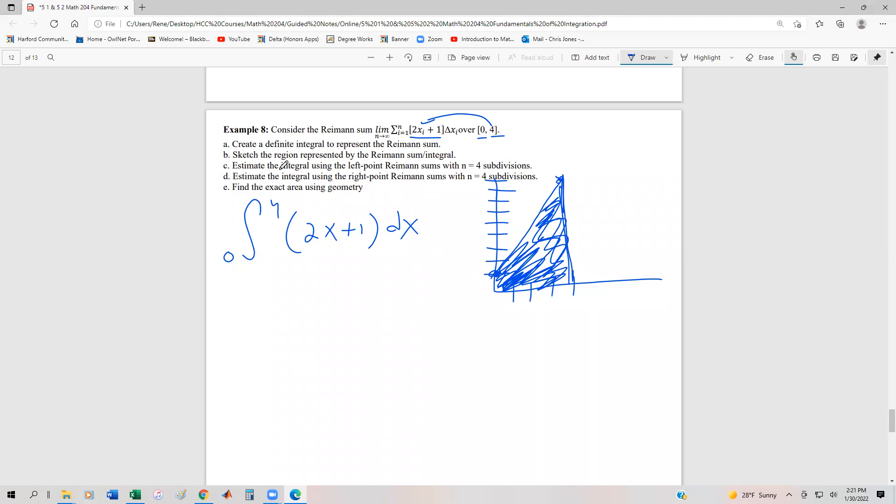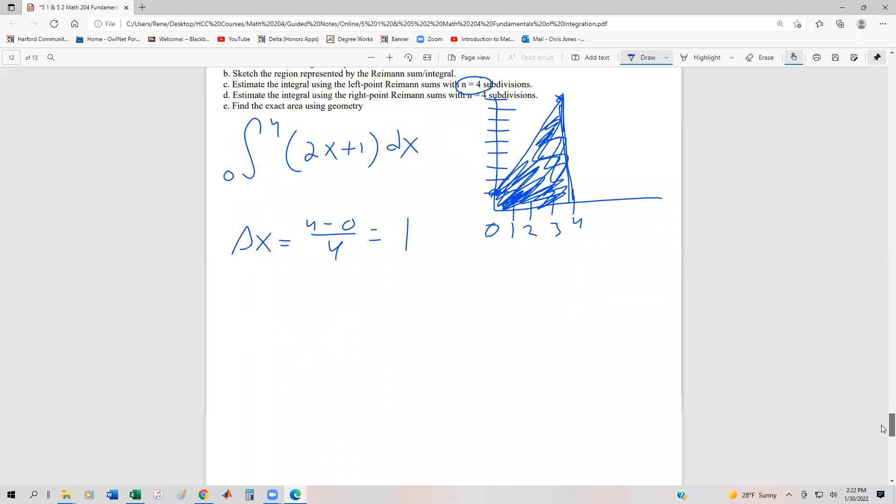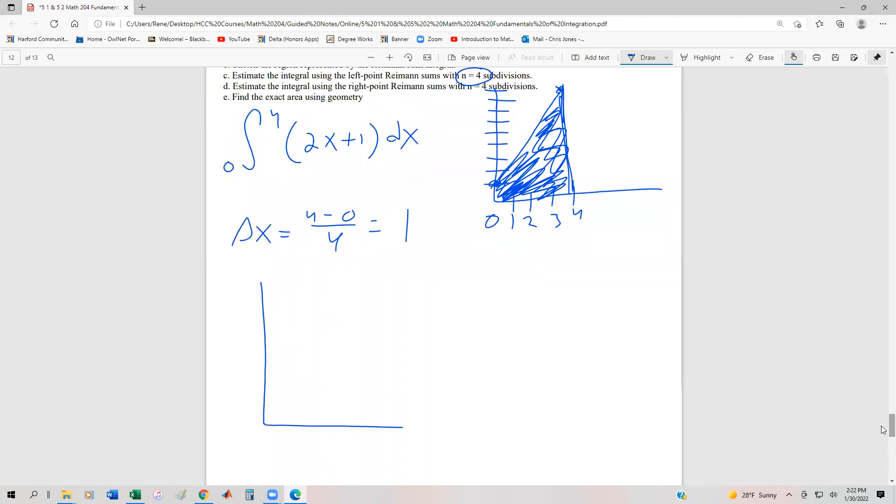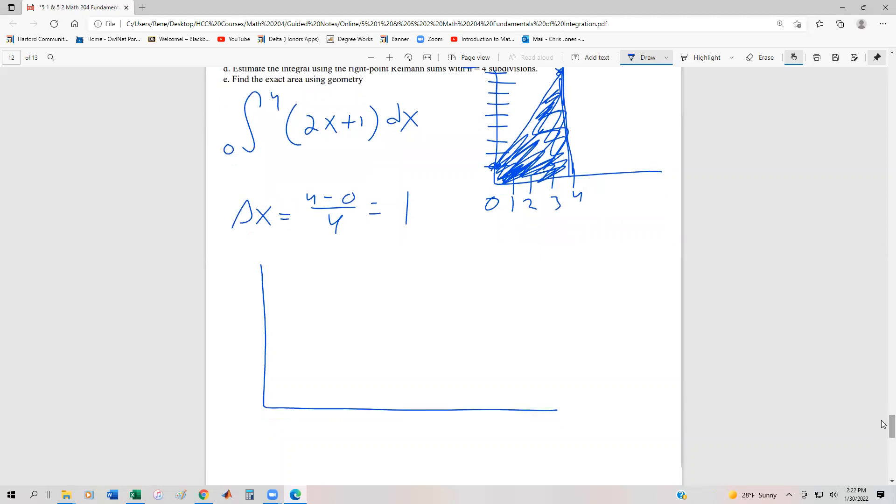Now we're going to approximate the area using the left endpoint rule. First, we need to find Δx: (4-0)/4 = 1. So 0, 1, 2, 3, and 4 are going to be the various grid points that mark off the subdivisions. Using the left endpoint rule, we draw our rectangles. Clearly there's going to be some underestimating going on here.